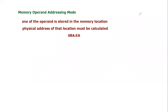Bismillahir Rahmanir Raheem. As-salamu alaykum everyone. In this video tutorial we are going to learn about memory operand addressing mode. We will learn what is memory operand addressing mode. We have already discussed two types of addressing mode: immediate addressing mode and register addressing mode. This is the third type of addressing mode used in the 8086 microprocessor — memory operand addressing mode.